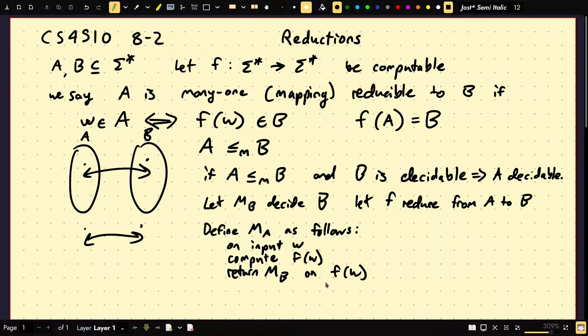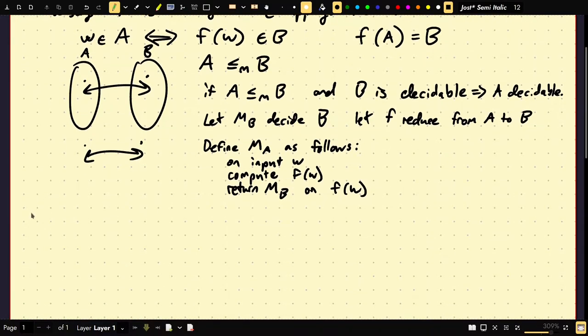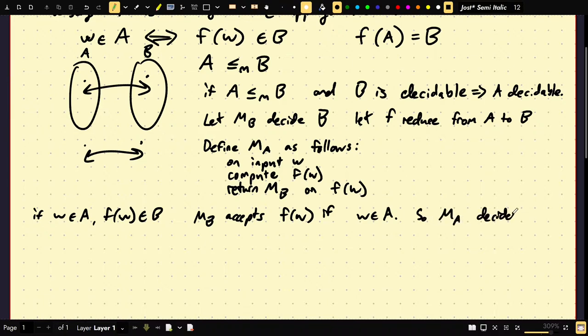So, whatever M_B, when you run M_B on F of W, whatever M_B is going to return, it will return. So, for this, if W was in A, then obviously F of W should be in B. M_B accepts F of W if W was in A, right? So, M_A is correct, then. So, M_A decides A. So, A is decidable.